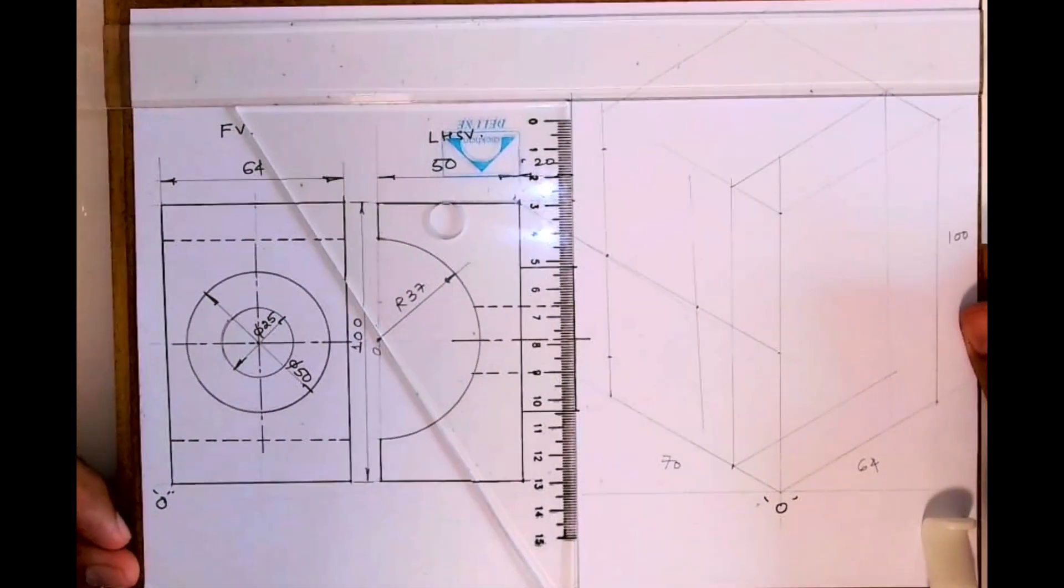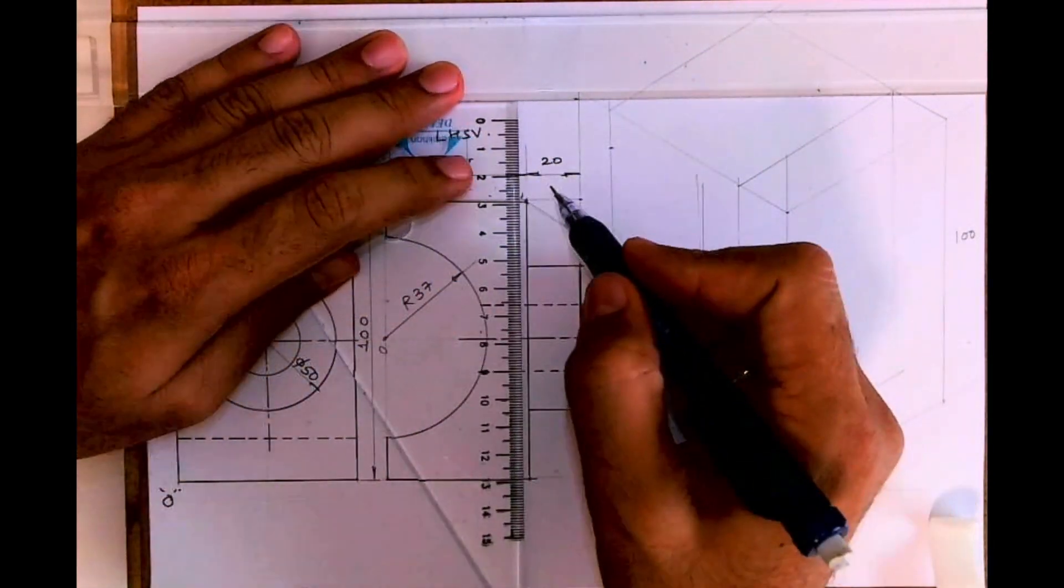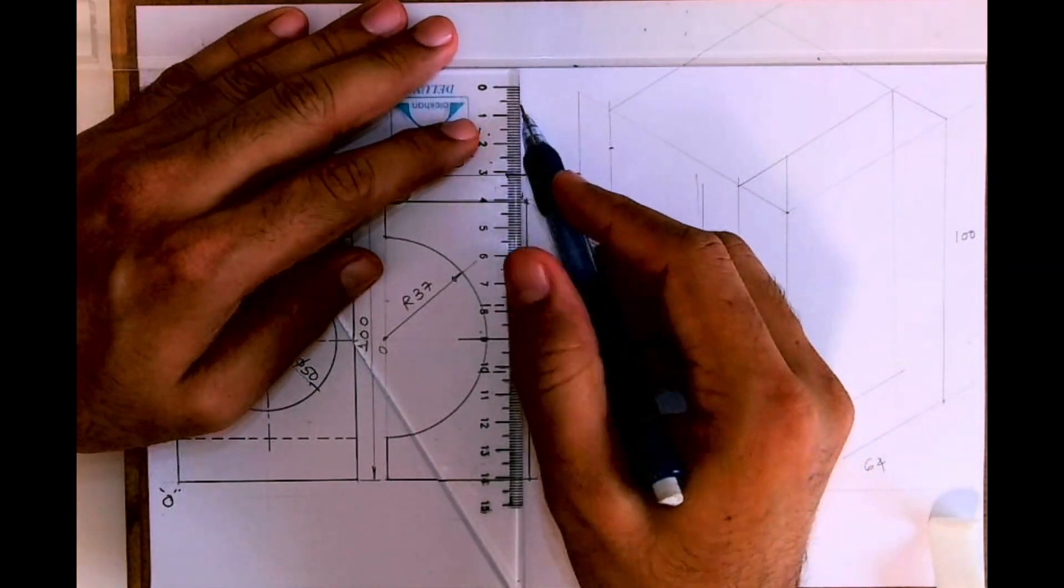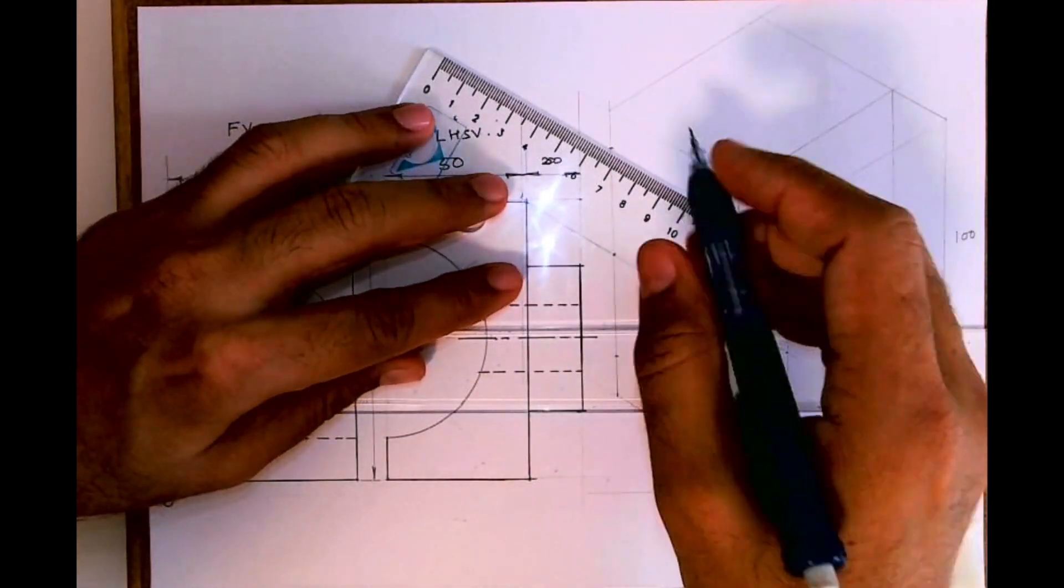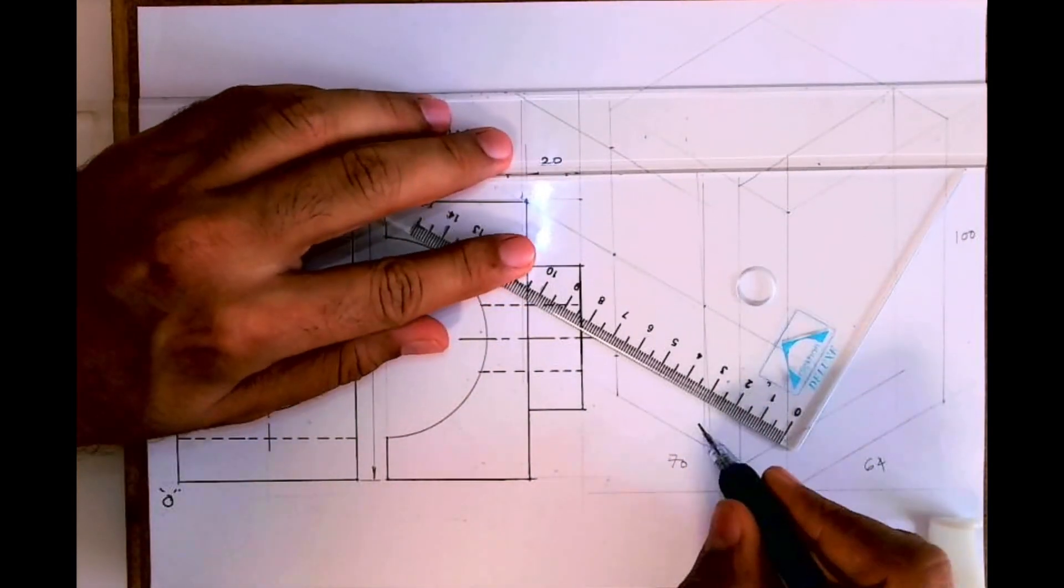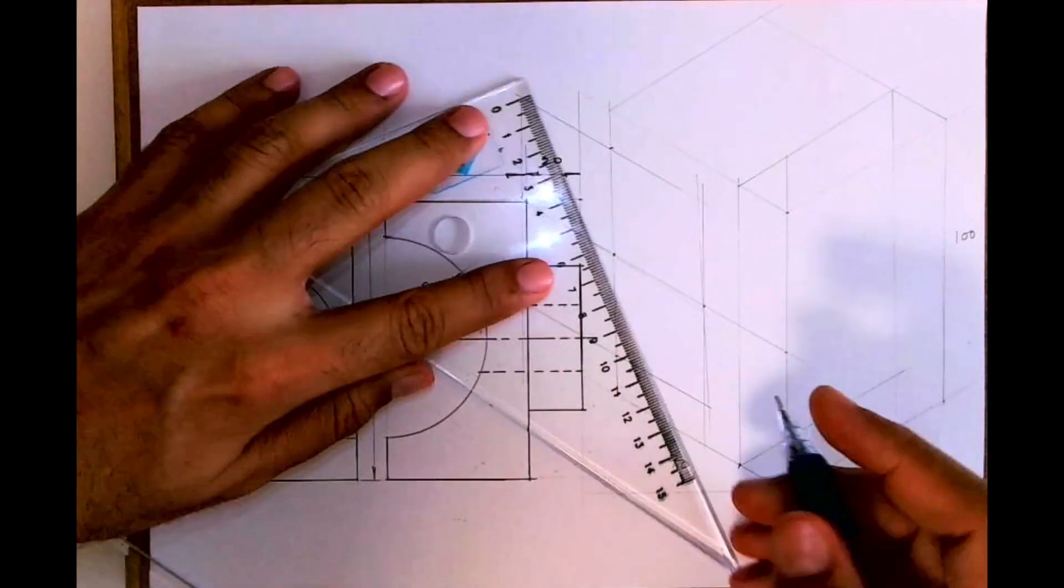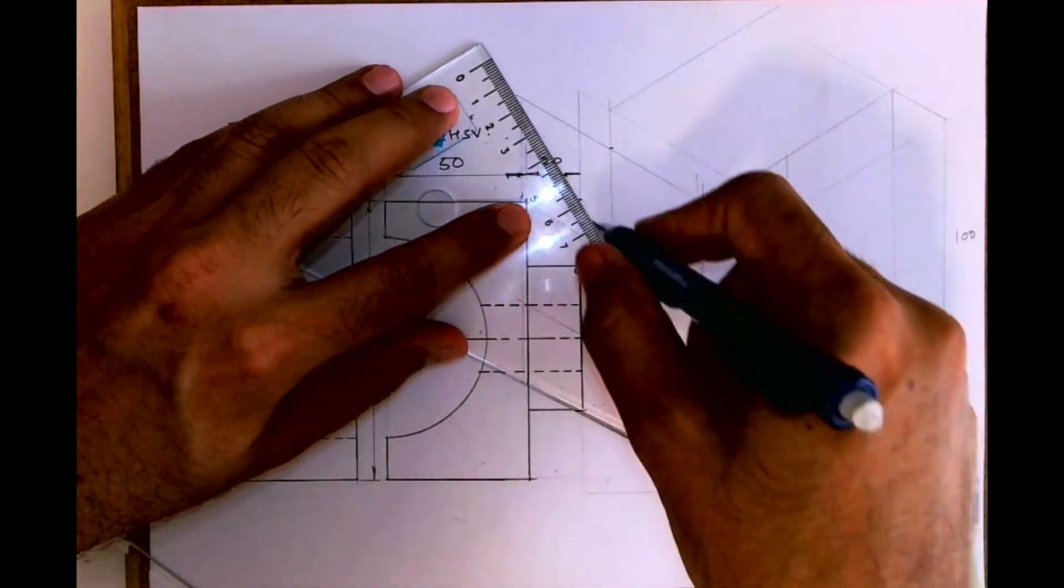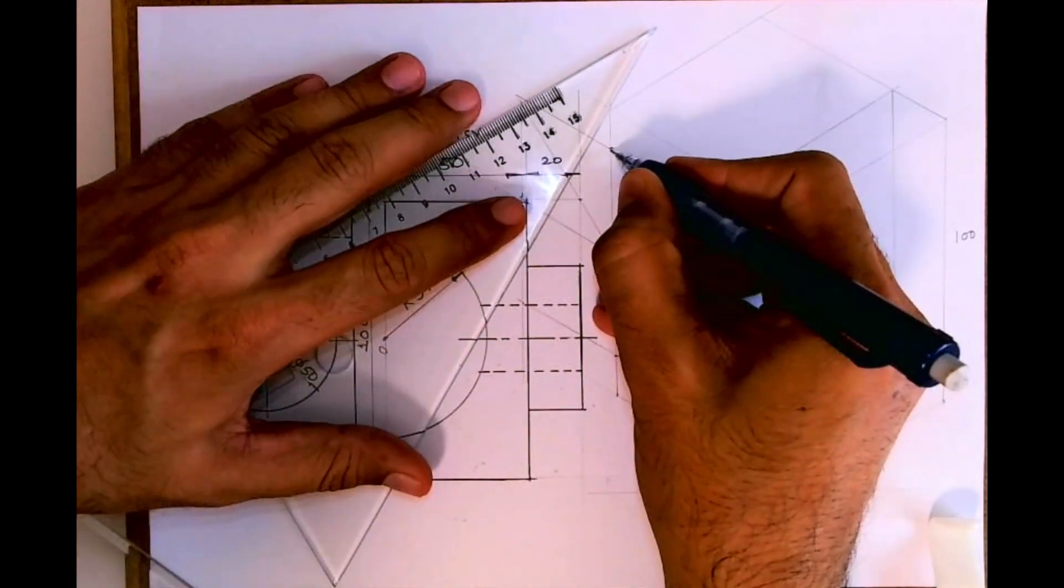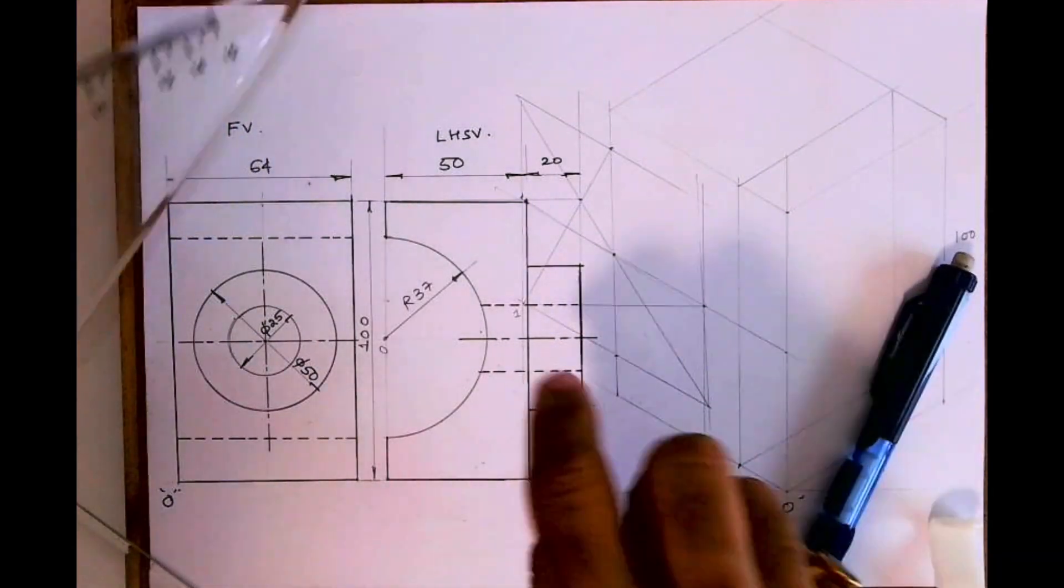Now we'll complete this rhombus. So from center point we took 37, 37, 37, 37 and we did this rhombus. Then we'll do longest diagonal. After that, this is point one and we'll join opposite midpoint. See, this is one.